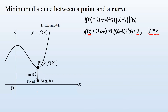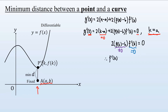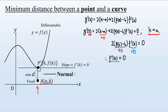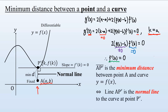If k equals a, then the x-coordinates of A and P' are the same, meaning line AP' is perpendicular to the x-axis. With k equals a, the equation becomes 2(f(k) minus b) times f'(k) equals zero. Since point A is outside the curve, f(k) minus b cannot be zero, so f'(k) must be zero. This means the tangent at P' is horizontal, so line AP' is still the normal line to the curve at P'. We arrive at the same conclusion.